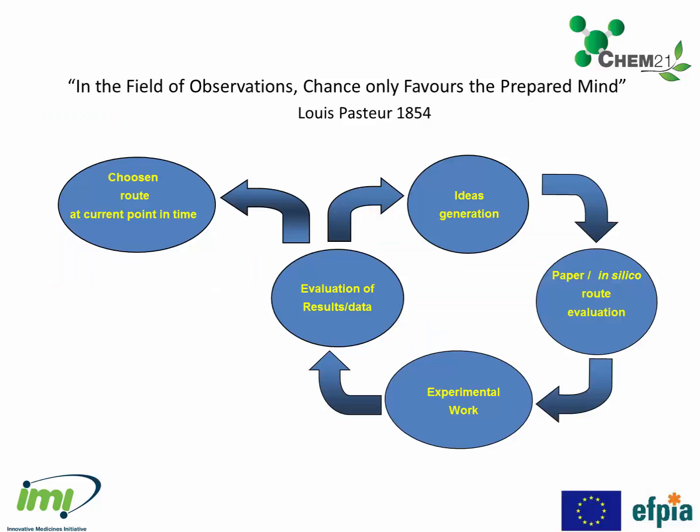Selecting the optimum route for a given API is often an iterative task. There may be several or many paper routes. These need to be evaluated on paper and the shortlist tested in the lab. This may lead to several rounds of test, evaluate, and refine before the best route is chosen.